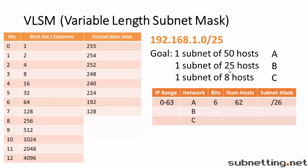Our second network requires 25 hosts. Add 2 is 27. The first power of 2 that is greater than or equal to 27 is 32, so we need 5 host bits. Our range is going to go from 64, because we left off at 63. 64 plus 32 is 96, which is the start of the next network, so this one goes from 64 to 95. The number of hosts we can have is 32 minus 2, which is 30. And our subnet mask is slash 27.